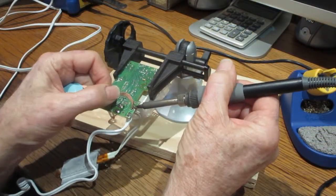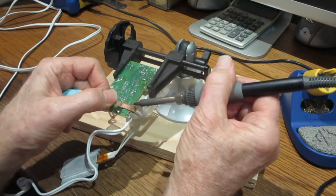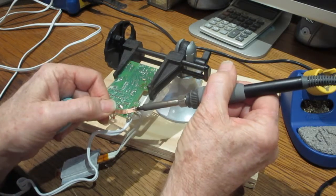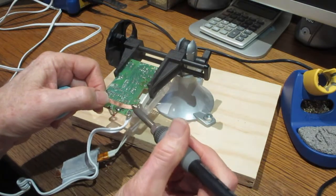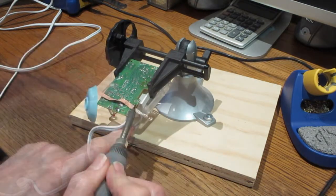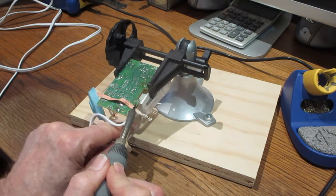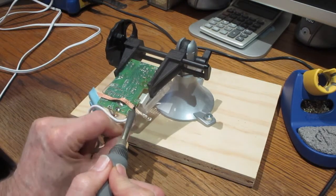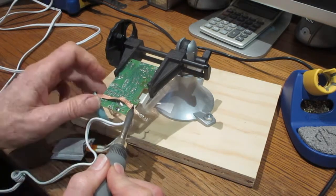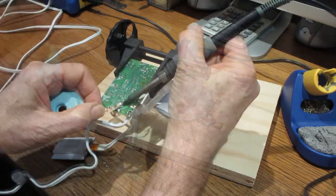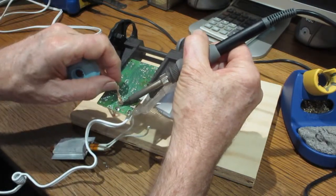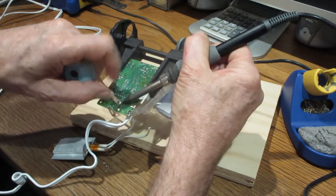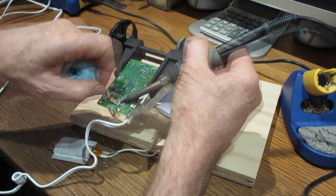Use a piece of solder wick to soak up the solder on the pads where the heating element leads connect to the circuit board. The heating element leads will come off easily once the solder is removed. Repeat the process for the other lead. In this case it just dropped off.